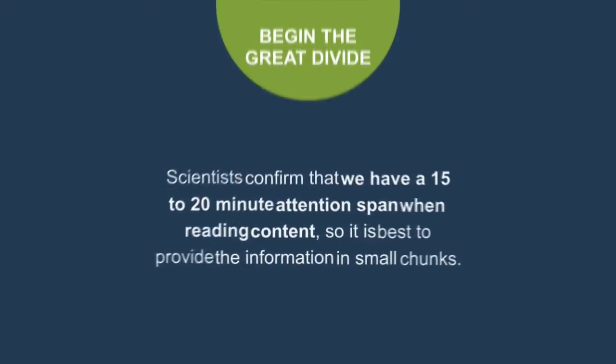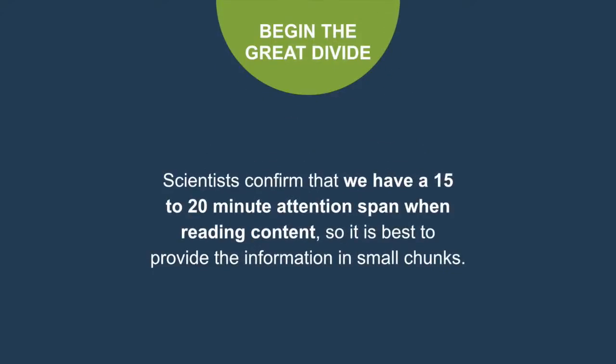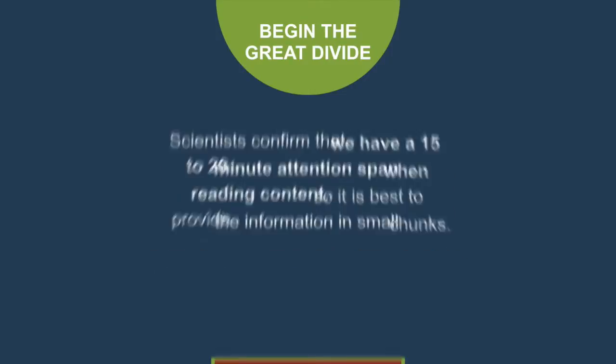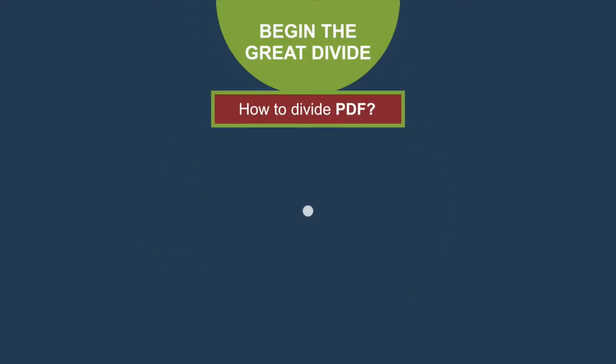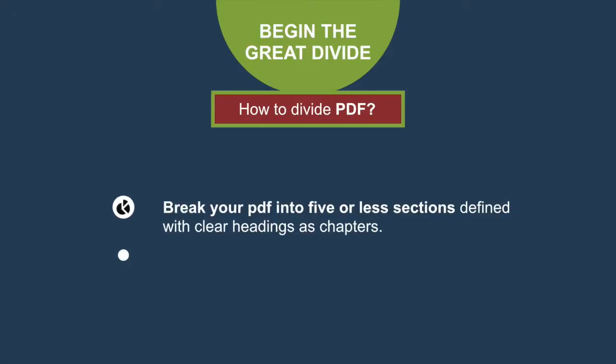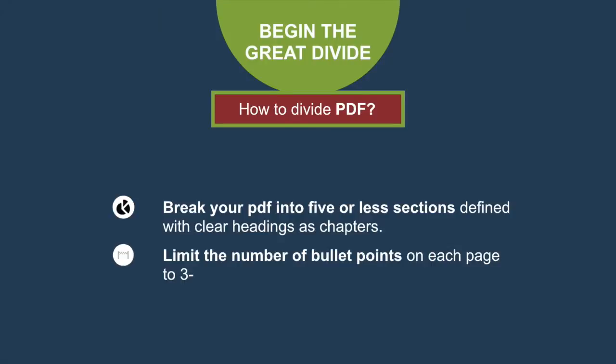Begin the Great Divide. Scientists confirm that we have a 15-20 minute attention span when reading content, so it is best to provide the information in small chunks. How to divide PDFs? Break your PDF into 5 or less sections defined with clear headings as chapters, and limit the number of bullet points on each page to 3-5 bullets.